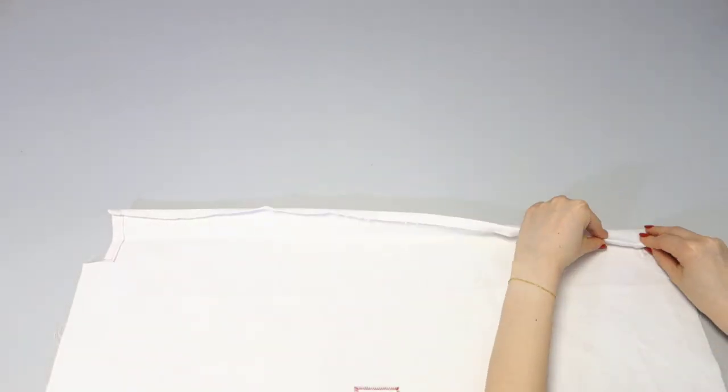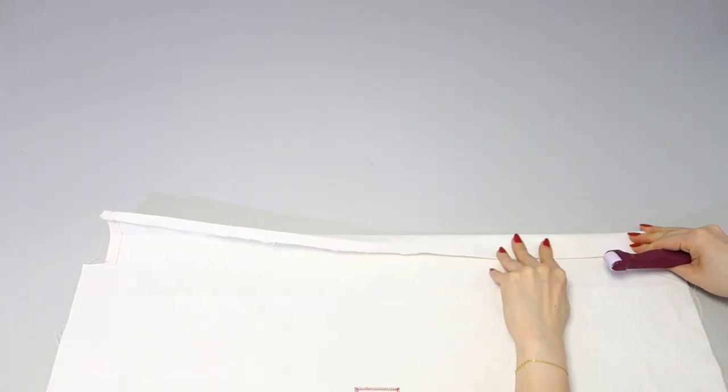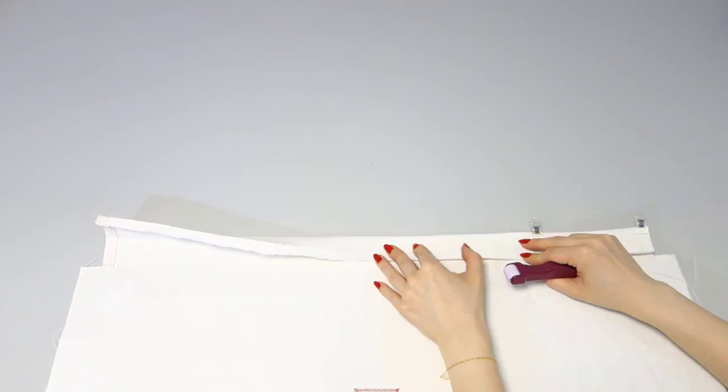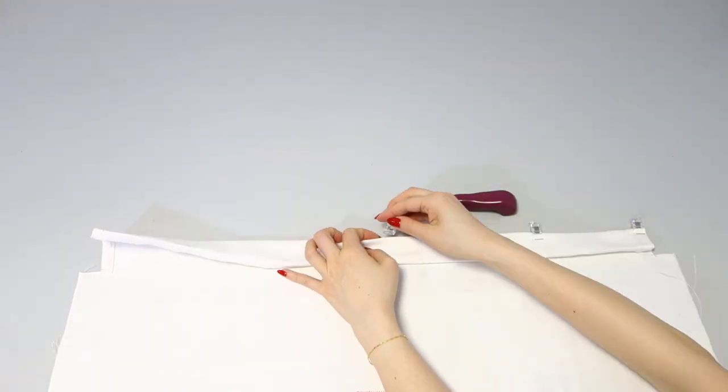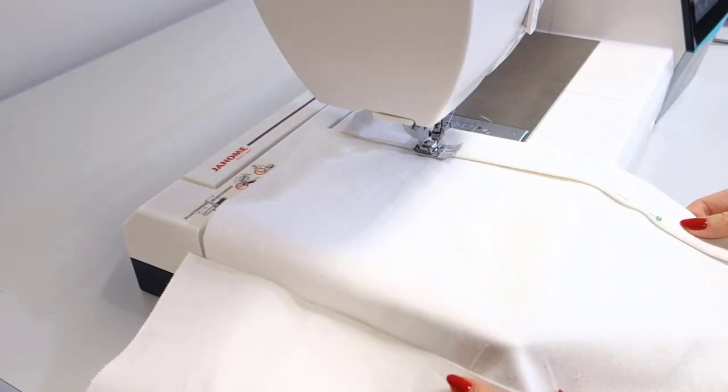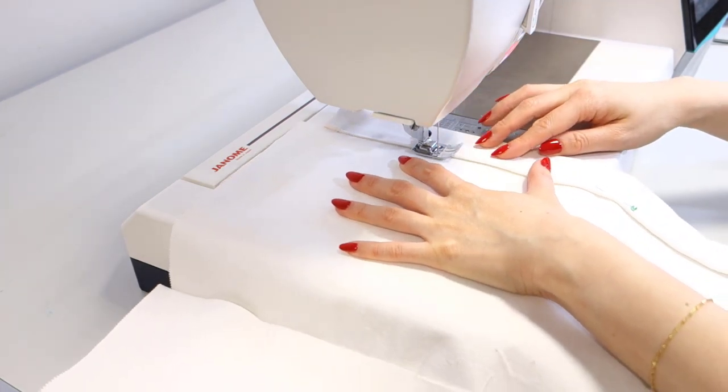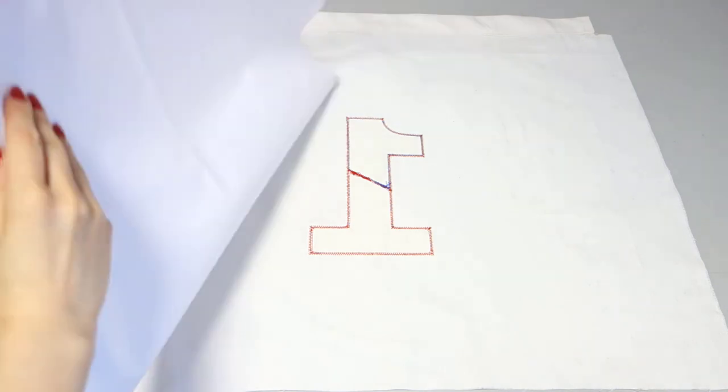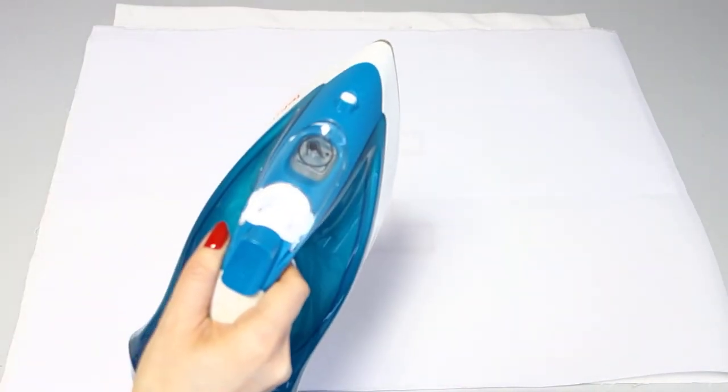Take the folded edge, fold once more, align it with the cut we made earlier and press it down firmly. Simply sew along the bottom using a backstitch. Apply the interfacing on the wrong side of the fabric, avoiding the drawstring area and iron it.